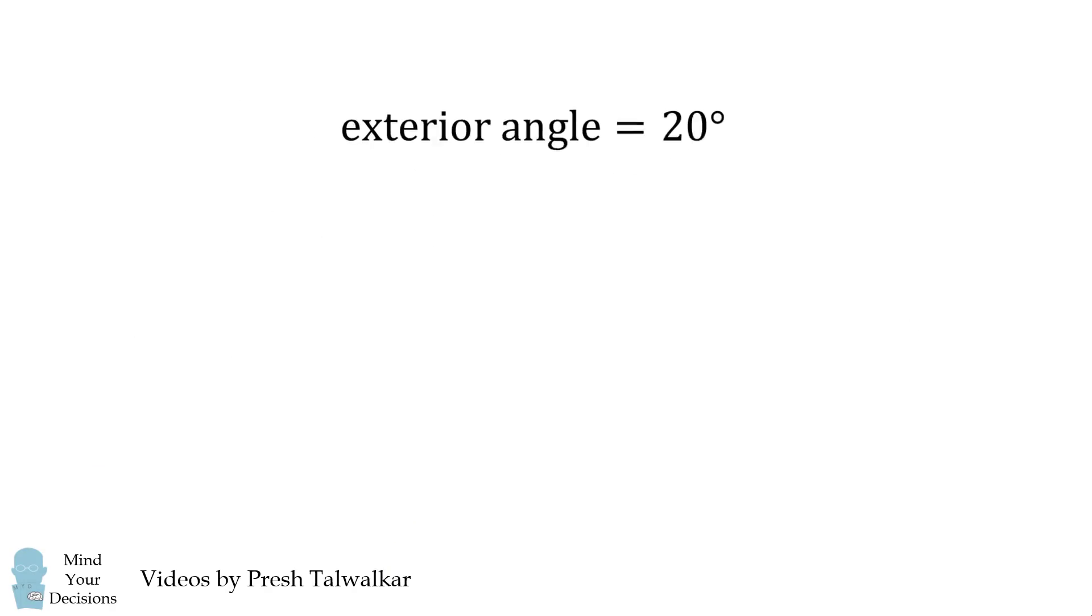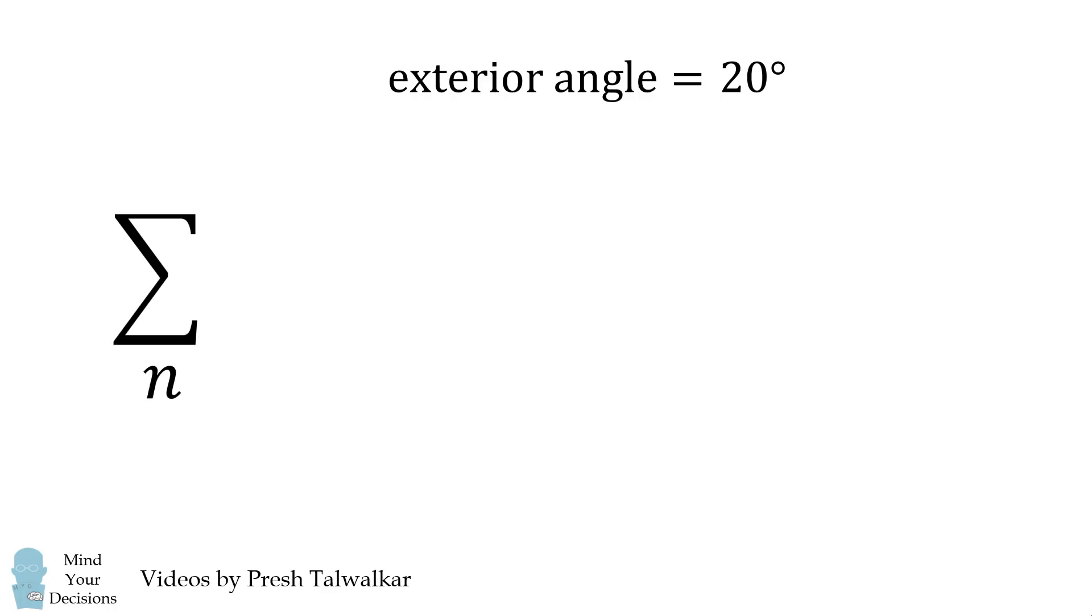Now, we'll use a property of exterior angles in a polygon. The sum of the exterior angles will be equal to 360 degrees. Since one exterior angle is 20 degrees, we have n times 20 degrees equals 360, and therefore n equals 18.